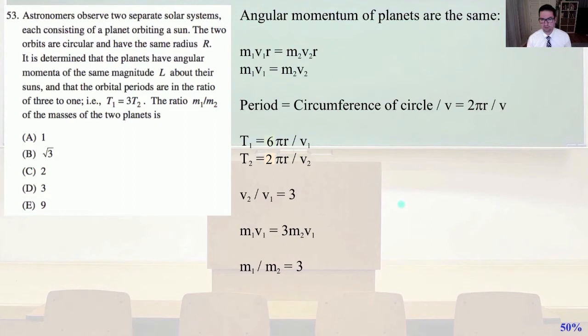So the angular momentum of the planets are the same. So that means M1 V1 R equals M2 V2 R. The same radius, we can drop that from each side. So M1 V1 equals M2 V2. Let's remember that the period equals the circumference of a circle divided by the velocity equals 2 pi R divided by V. Remember T1 equals 3 T2. So V2 divided by V1 equals 3. So M1 V1 equals 3 times M2 V1. So that means M1 divided by M2 simply equals 3 and that is letter D.